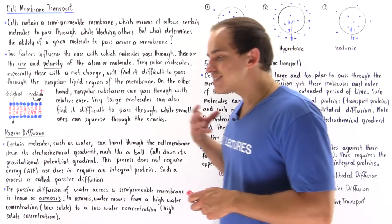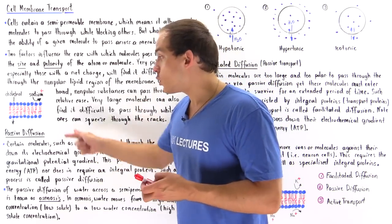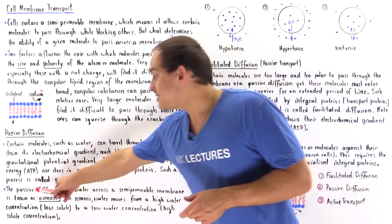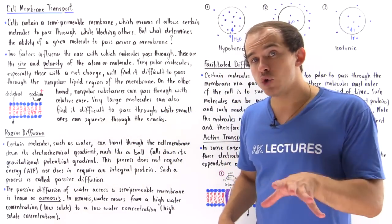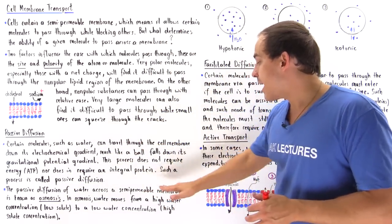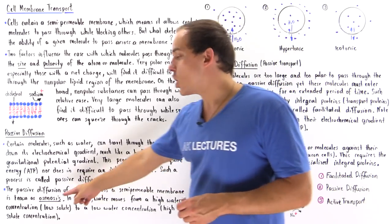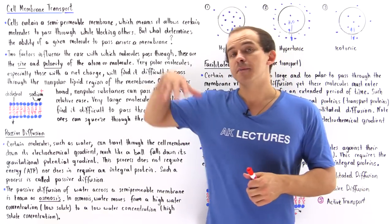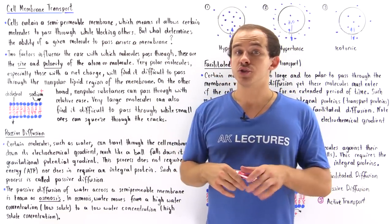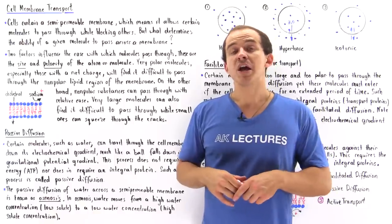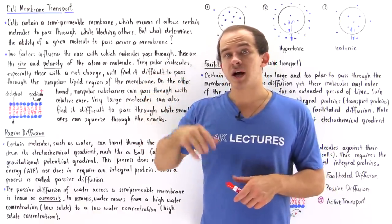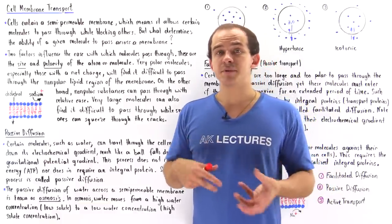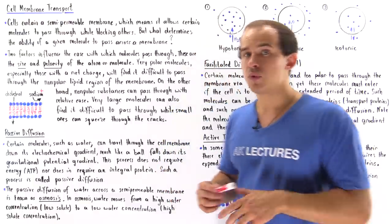Water is such a common molecule undergoing passive diffusion that we give it a special name. The passive diffusion of water via a semi-permeable membrane is known as osmosis. In osmosis, water always travels from a high water concentration to a low water concentration, or equivalently, from a low solute concentration to a high solute concentration.